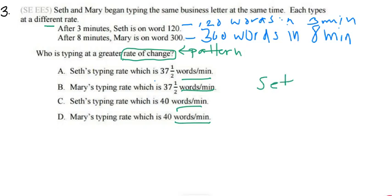So for Seth, if he typed, now we can put this, if it's a rate of change or a pattern, we can put it in a slope or write it as a fraction. So if Seth typed 120 words in three minutes, I need to figure out how many words in one minute. So if I can figure out Seth's unit rate, how many words in one minute, I would do the same for Mary, how many words in one minute, then you can figure out the answer to your question.